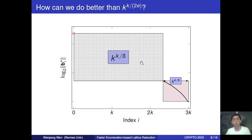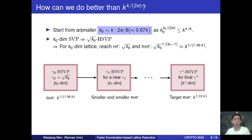We therefore need to continue to reduce this basis such that the resulting first basis vector achieves the same norm as before—the same Hermit and root Hermit factor. In more detail, we run SDBKZ with a reduced size k0 equal to k times 3/8, approximately 0.67k, so that the worst-case enumeration cost over this reduced size is well controlled within the expected cost. Different block sizes like k0 will be involved in our new algorithm, and k here only serves as a cost parameter rather than a block size.